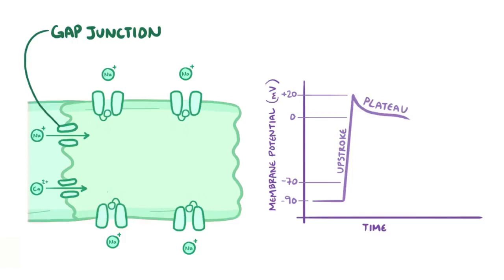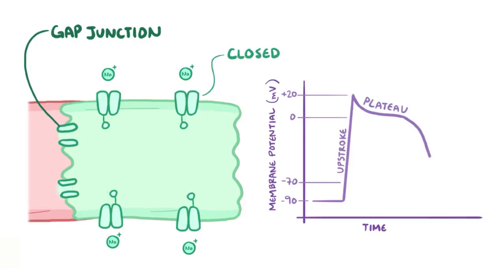After the upstroke, there's the plateau phase, and then as the cell repolarizes, the sodium channels start to recover. And even though they're closed, they're still excitable, and eventually all the channels recover and the cell repolarizes back to its resting state around negative 90 millivolts.